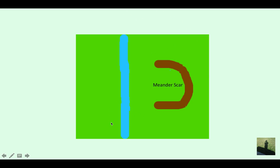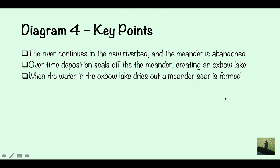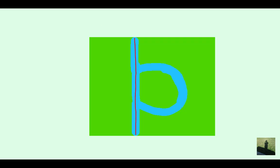Here's your last diagram that you're going to be drawing. Diagram four. The river continues on the new riverbed. And the meander is abandoned. And over time, deposition seals off the meander, creating an oxbow lake. So here what will happen is deposition is going to occur here and here as no new water is flowing through. So here and here is going to get sealed off. So that's not going to be there anymore.